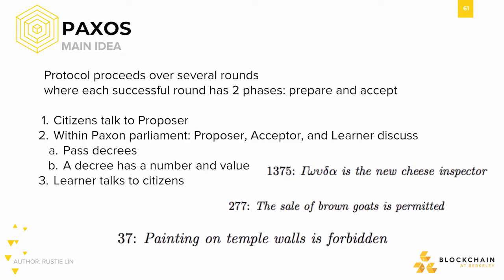The protocol that the Paxon government uses proceeds over several rounds until consensus is reached. Each successful round has two phases: prepare and accept. First, some citizens will talk to a proposer. Then the proposer proposes a decree to the Paxon Parliament. A decree has a number and a value — the value can be anything, such as 'the sale of brown goats is permitted' or 'painting on temple walls is forbidden.' However, the number associated with the decree must be strictly increasing.